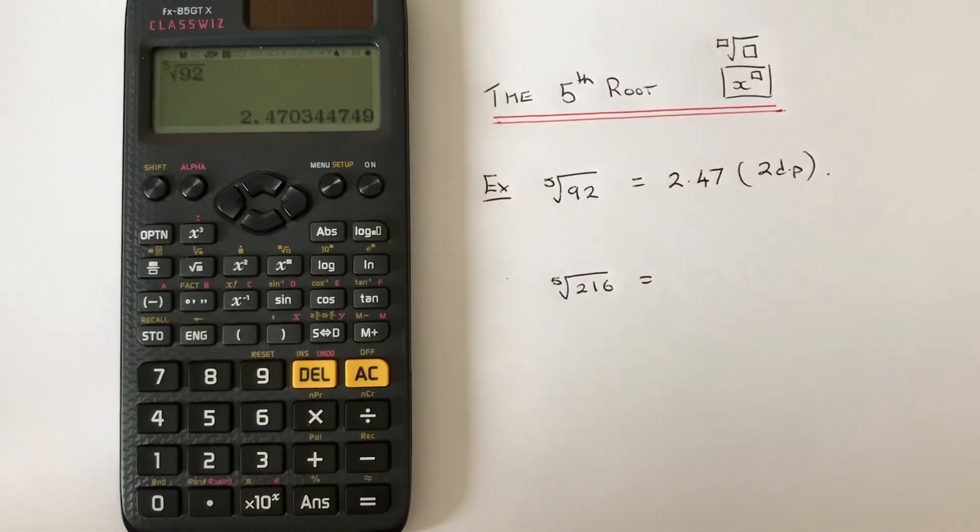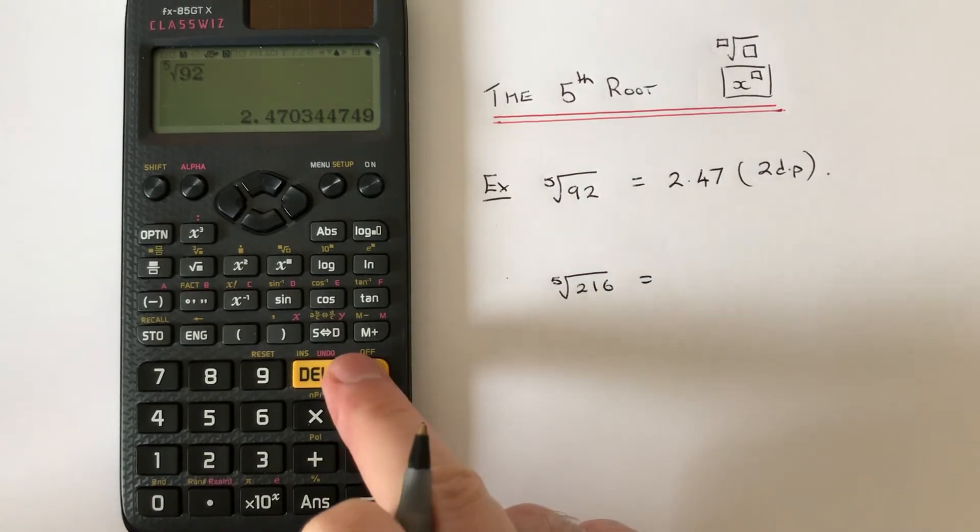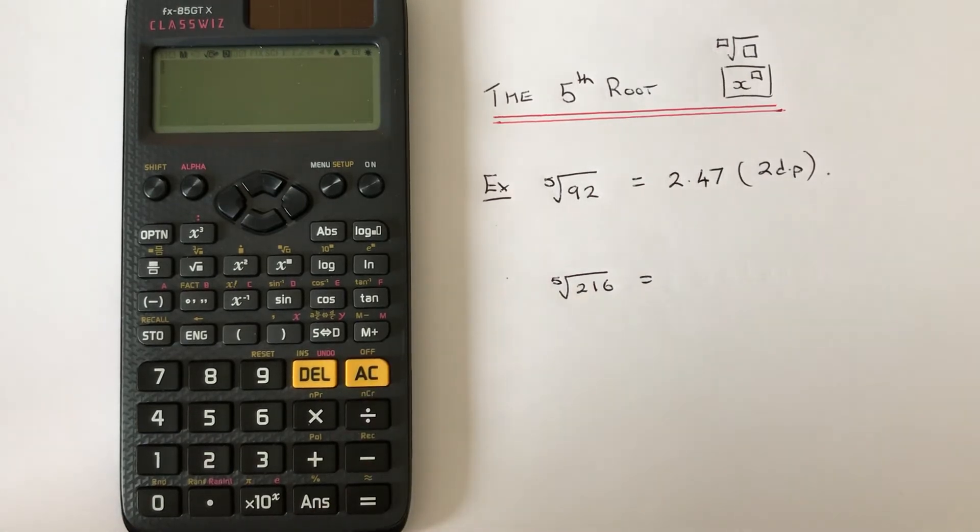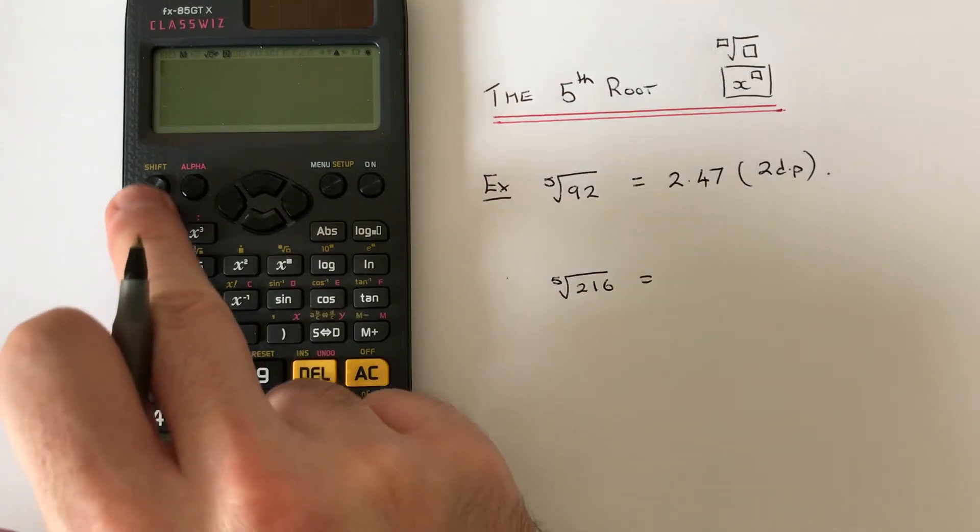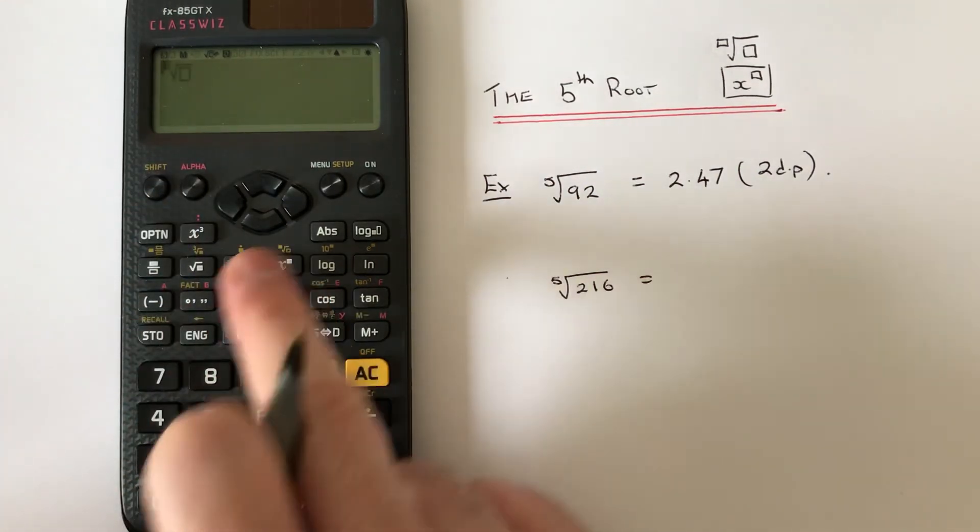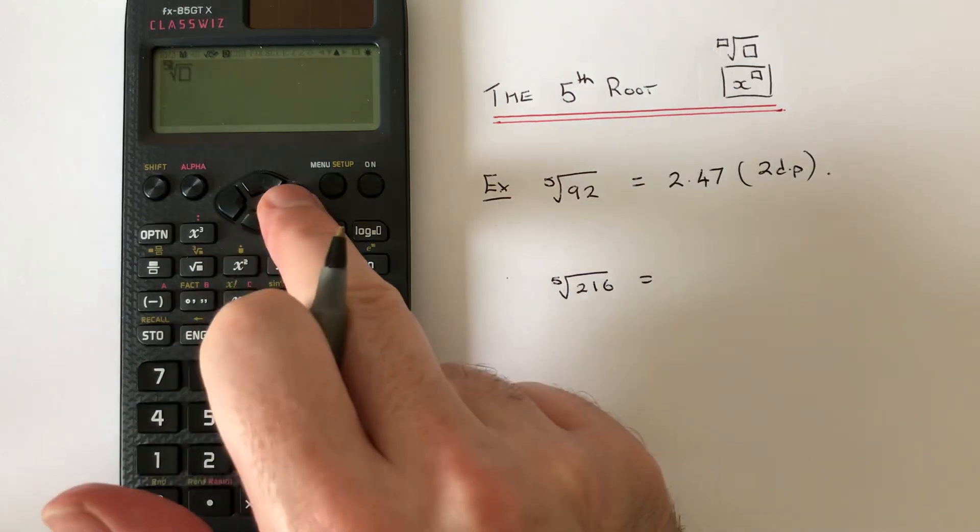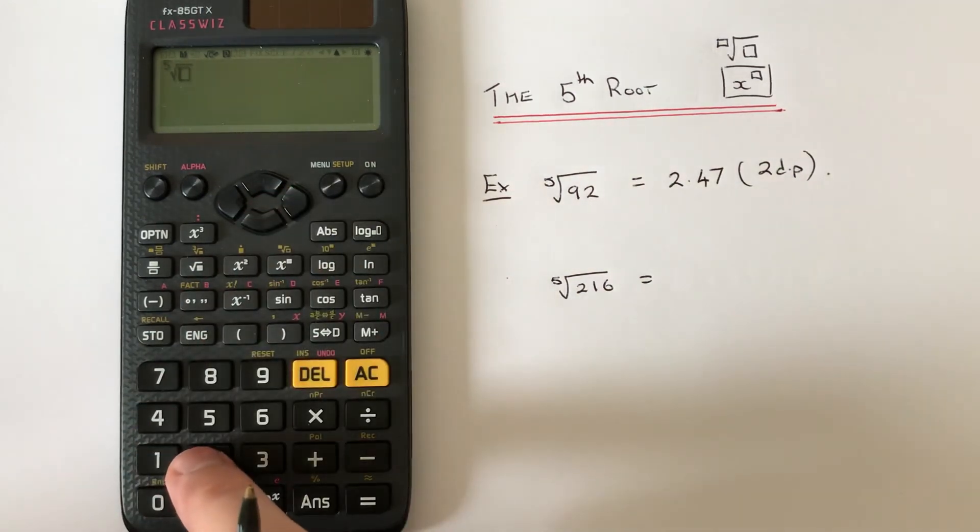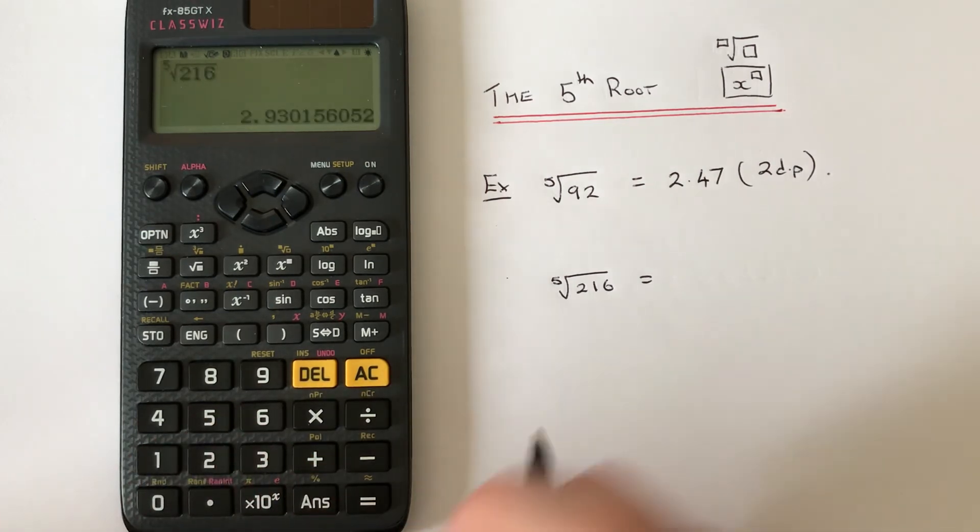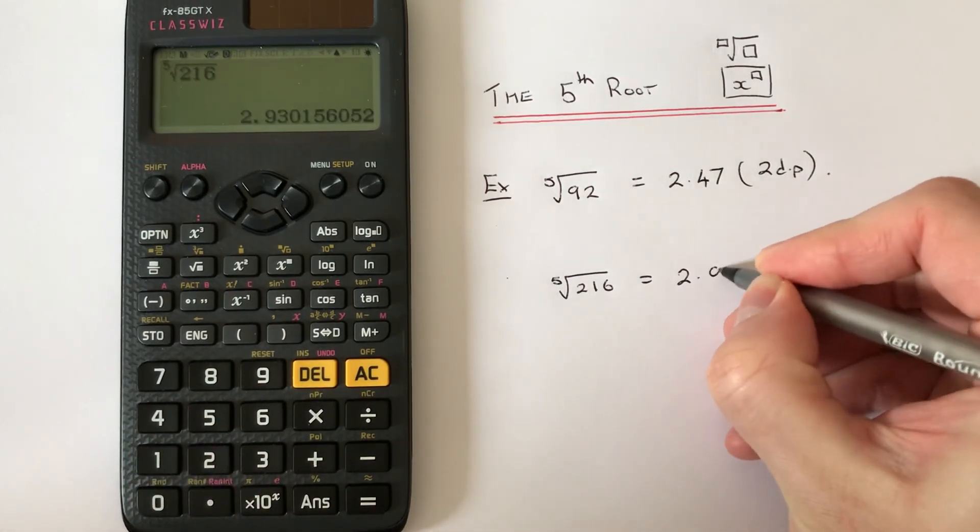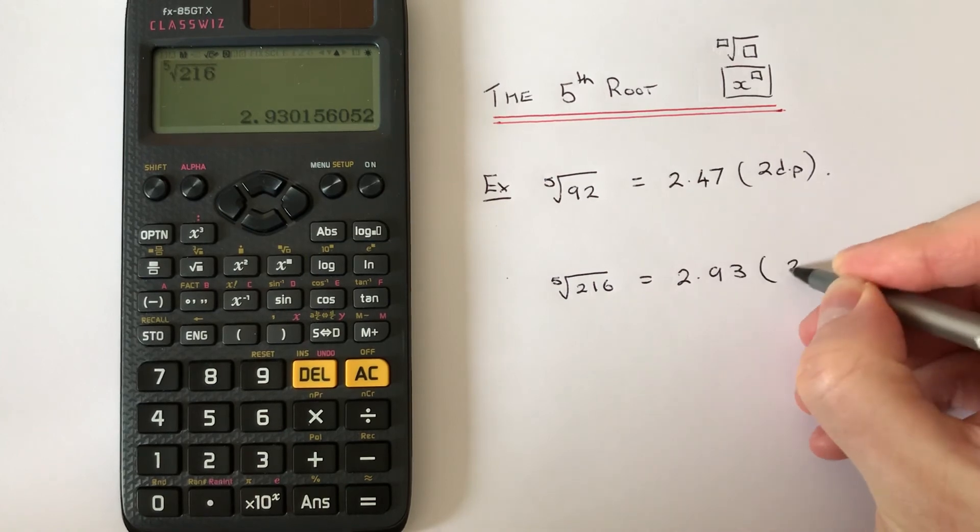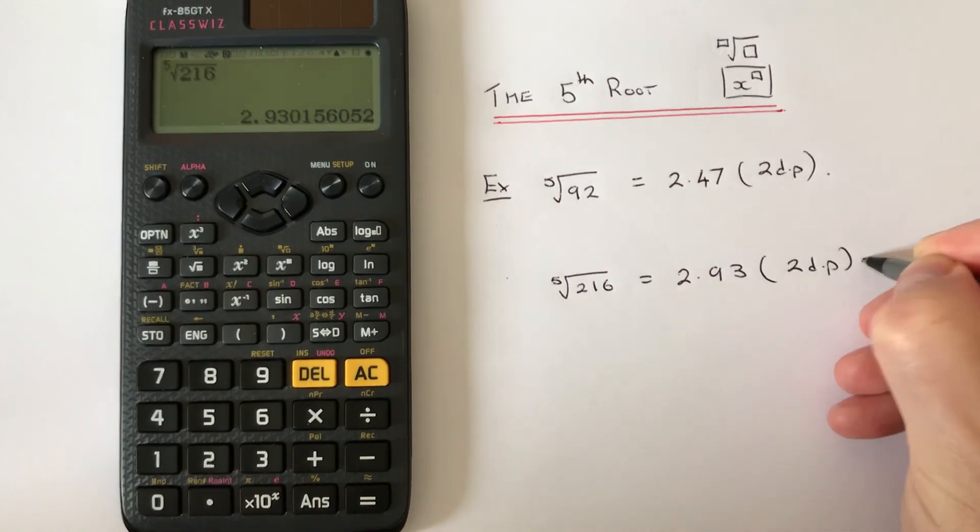Let's have a look at example 2. This time I've got the fifth root of 216. If you press shift, x box, type 5 on the root, and type in 216, hit the equals, and we get 2.93 to 2 decimal places.